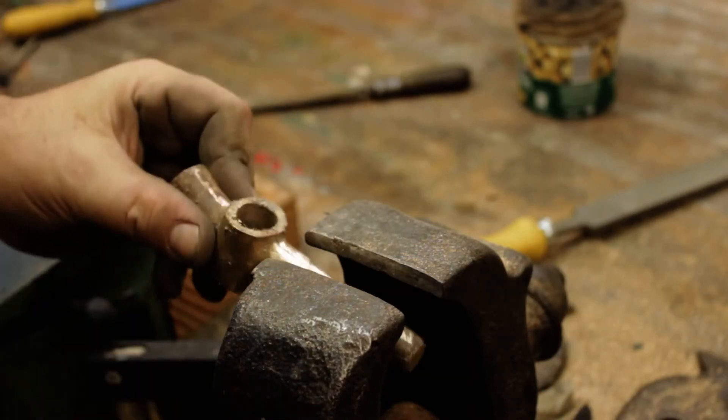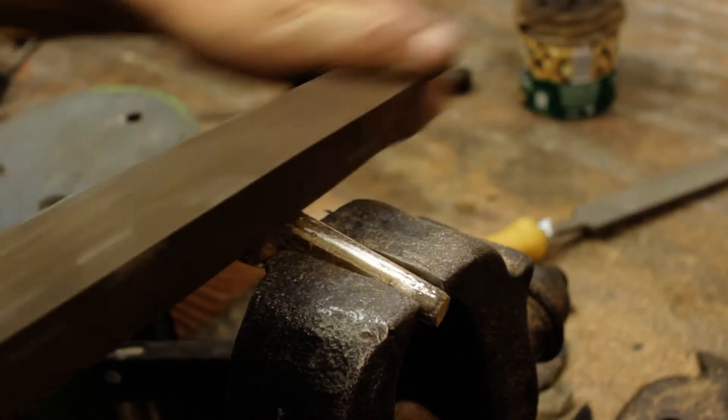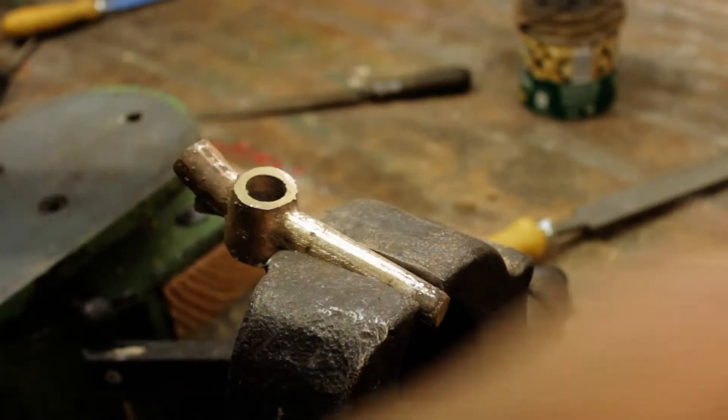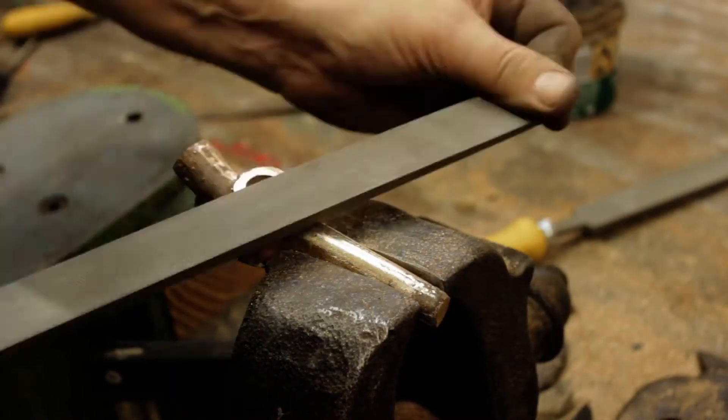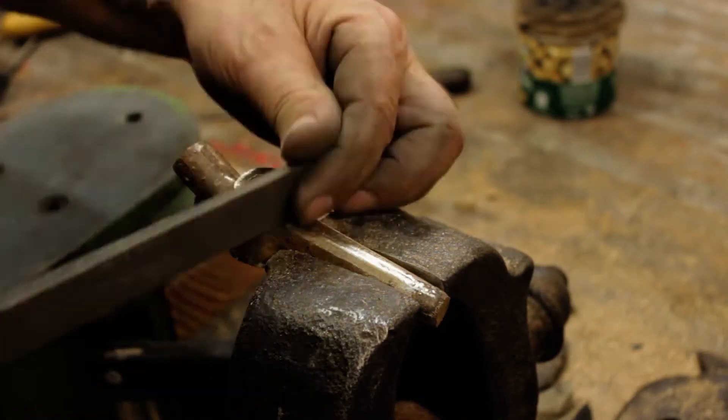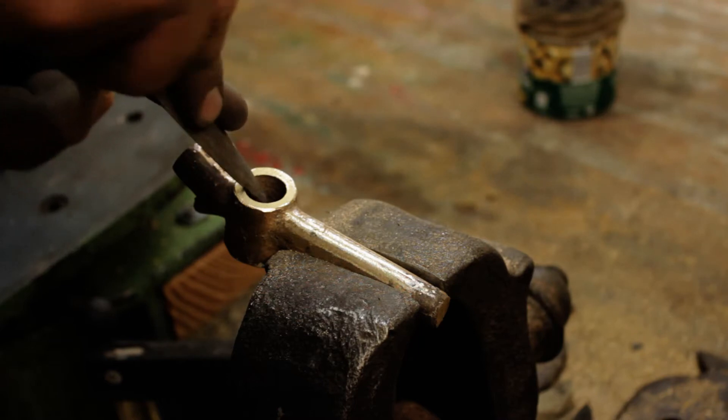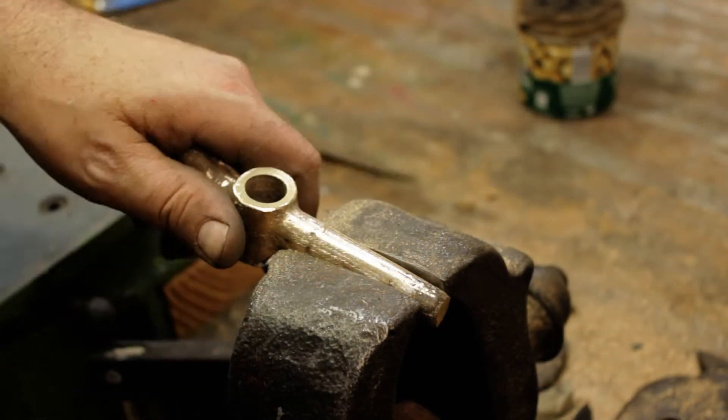Before we get to the fitting of the cone, there is some filing and boring work to be done. To move material, I will start off with a roughing file. This is followed by a semi-finishing file and then by a mill file. I will throw in the occasional use of needle files as well.